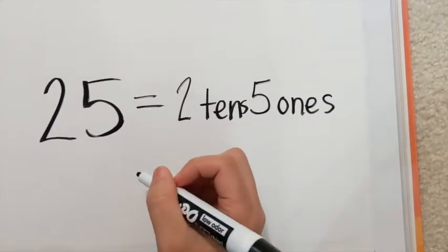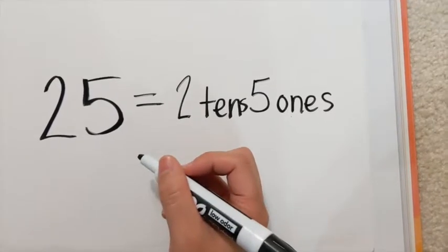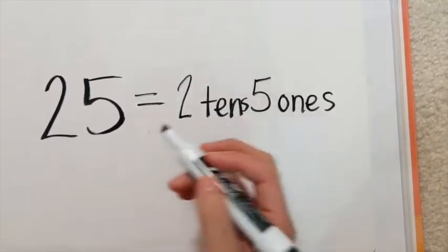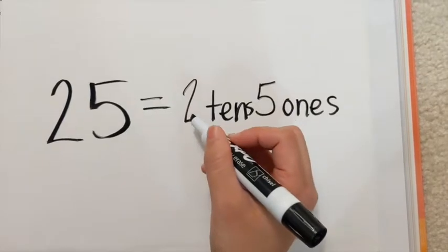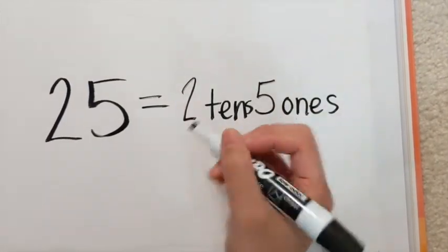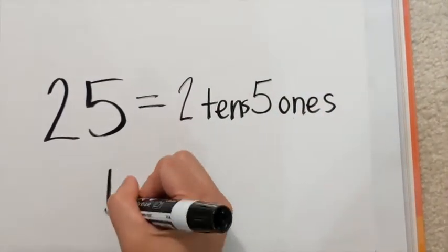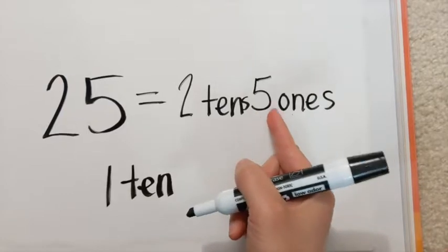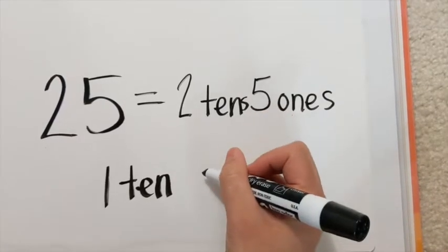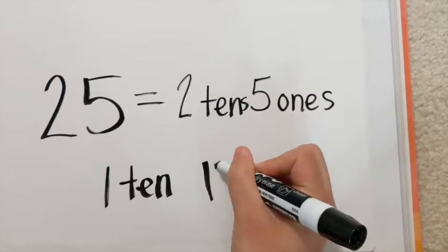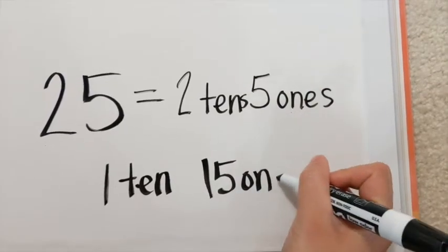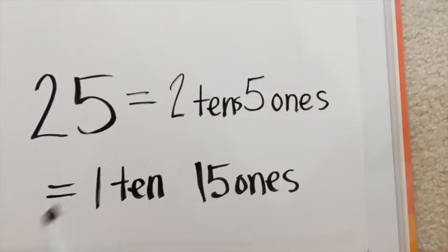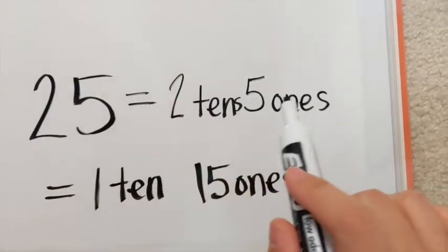Now we're going to regroup. If you can just take a ten and move it over to the ones place — what happens if you take one of these tens and move it over? It becomes one ten. And if you move one ten rod over here, then you have one ten rod and five ones. So one ten and fifteen ones is actually the same exact thing as two tens and five ones.